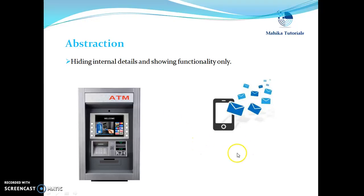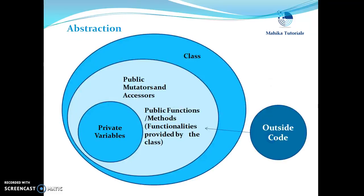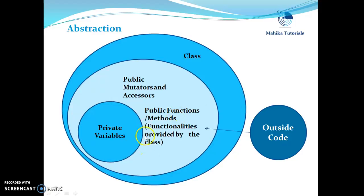Similarly, when we send an SMS through a mobile, we type the message and just send it, irrespective of what technology is working at the backend. So when we talk about a programming language, how can we achieve abstraction? Whenever outside code has to access a member function of your class, it can be done by providing those functionalities as public. The outside code simply knows that there is some functionality which performs a specific task, so it will just invoke that functionality without having knowledge of the internal implementation details.